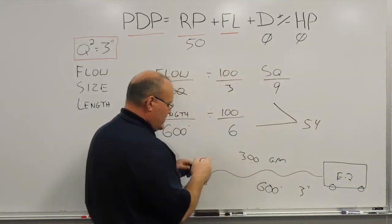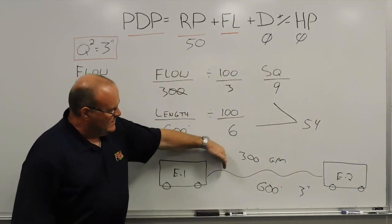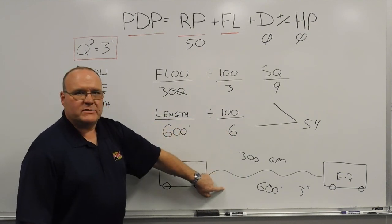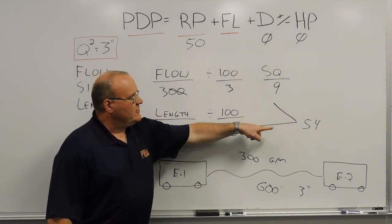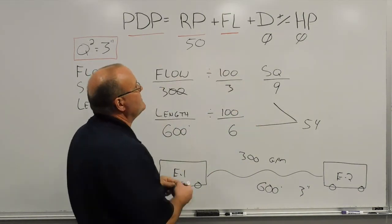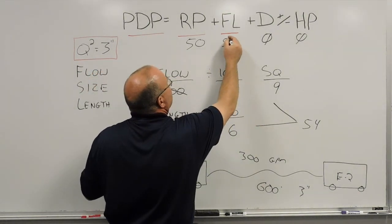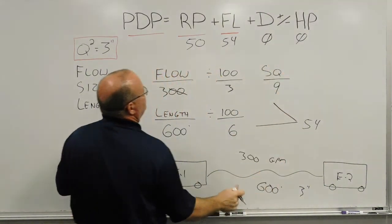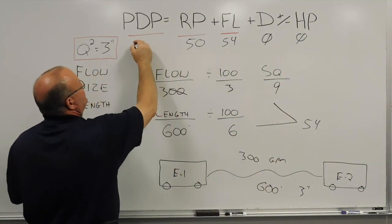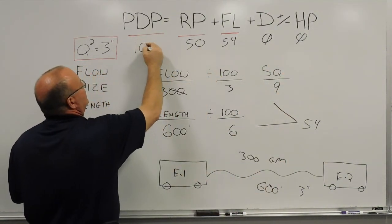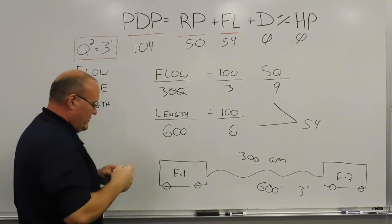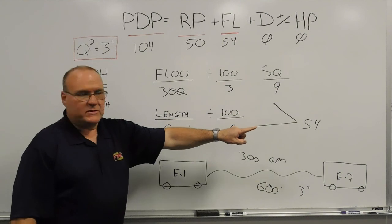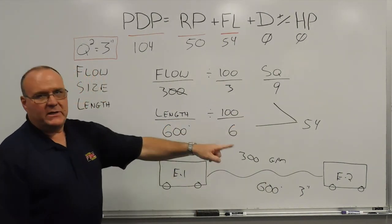That 54 is the friction loss in the hose line from engine 1 to engine 2 — 300 gallons a minute through 600 feet of 3-inch hose. We plug that 54 into our formula. No devices, no head pressure or elevation. We add those together and get a pump discharge pressure of 104 pounds total — friction loss plus residual pressure — between engine 1 and engine 2.